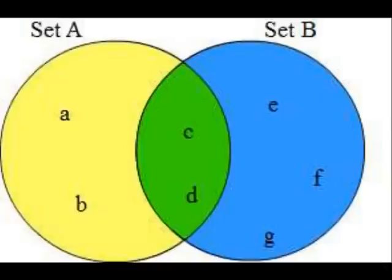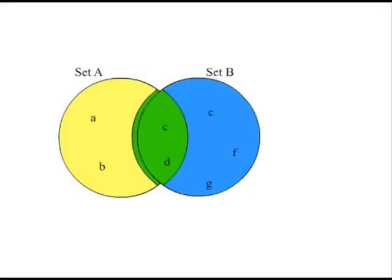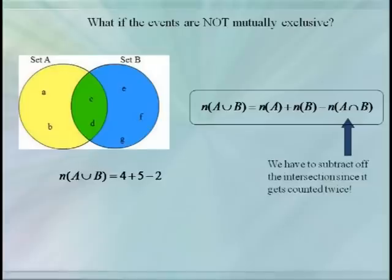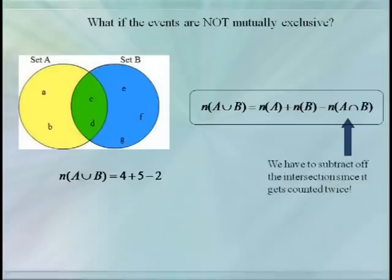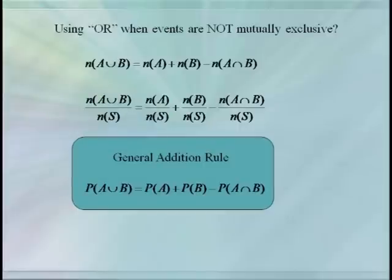But what if our sets are not mutually exclusive? Now we can't just add cardinalities together. You can see in this example that the number of things in A union B is seven, which is not equal to the four things in A plus the five in B. The problem, of course, is that we've counted the elements where they overlap twice. So now we have to use the more general formula: the number of things in A union B equals the number in A plus the number in B minus the number in A intersect B. Now we can divide by the number of things in our sample space again and get our general addition formula: the probability of A union B equals the probability of A plus the probability of B minus the probability of A intersect B.